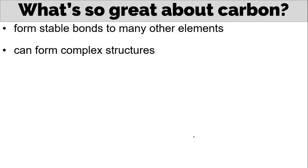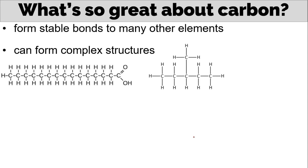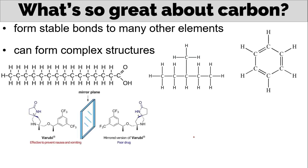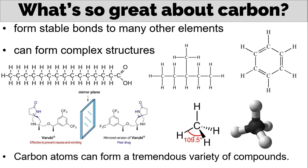Carbon atoms can also form complex structures such as long chains, branch chains, rings, chiral compounds, complex 3D shapes, etc. Because of this variety in bonding and complexity, carbon atoms can form a tremendous variety of compounds. There are more than 16 million organic compounds known right now, as opposed to about 600,000 inorganic compounds.